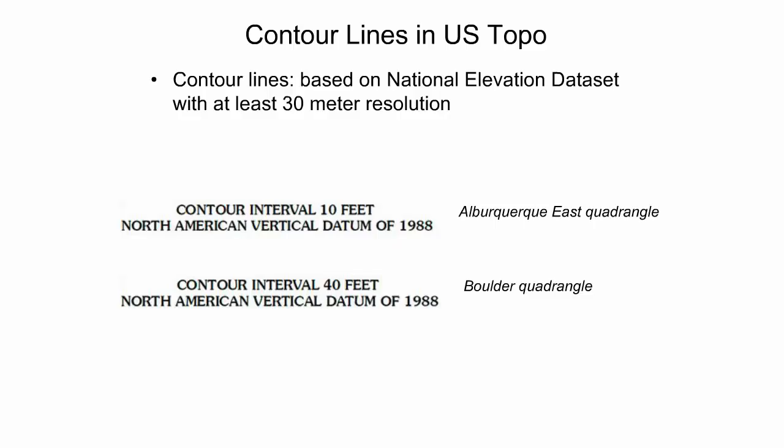Contour intervals can vary between different US Topo quadrangles. For example, the Albuquerque East Quadrangle uses a 10 feet interval while the Boulder Quadrangle uses a 40 feet interval. The US Topo map series attempts to make contour intervals consistent across regional areas. Regions with steeper elevation changes, such as the Rocky Mountains, use larger contour intervals, while areas with gradual elevation changes, such as Florida, use smaller contour intervals.